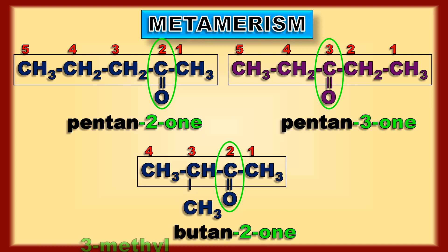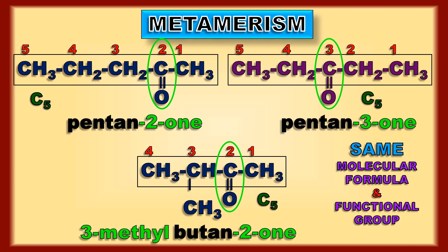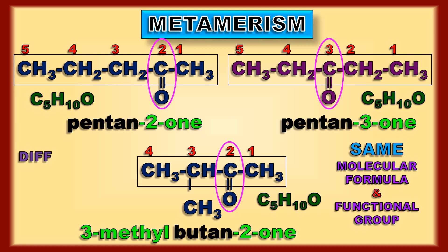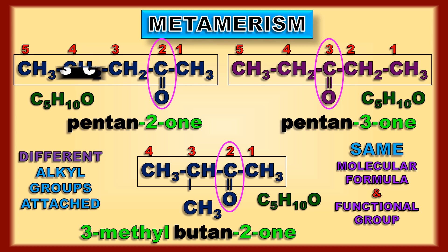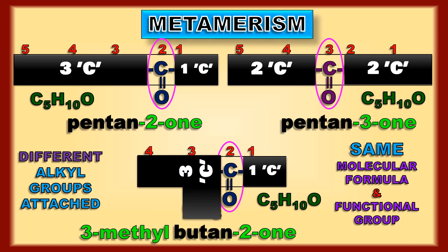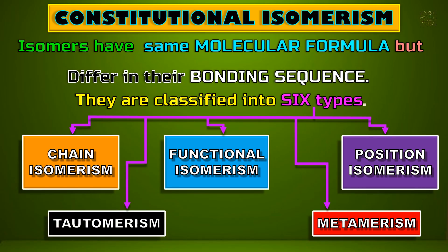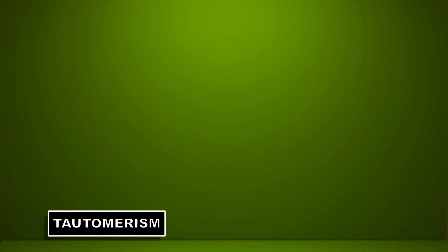They share the same molecular formula and functional group, but the groups attached on either side of the functional group change — 3 carbons and 1 carbon, then 2 carbons and 2 carbons, then 3 carbons and 1 carbon. That is metamerism. The next one is tautomerism.